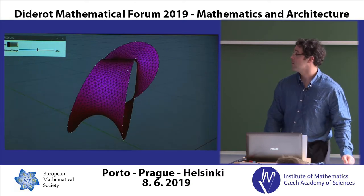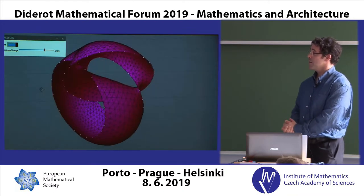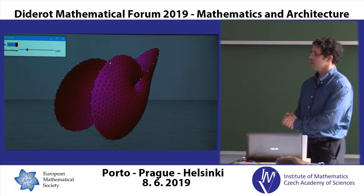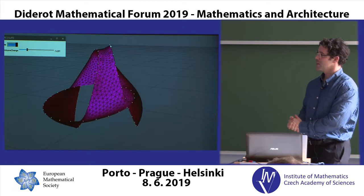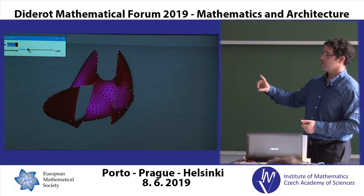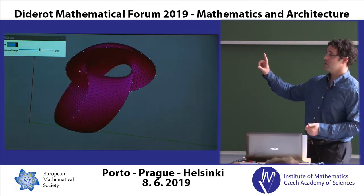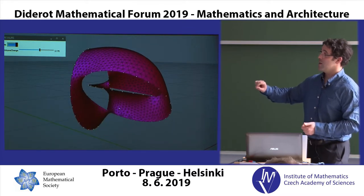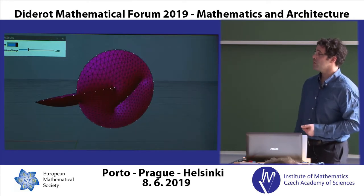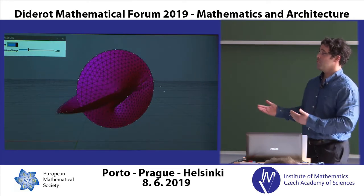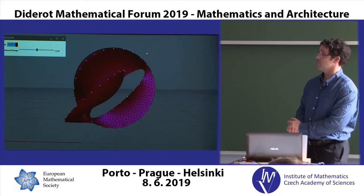Another thing you can combine with this is fixing the volume. Defining a volume for an open surface seemed strange at first, but the formula works by forming a tetrahedron between every triangle and an arbitrary point and summing the signed volumes of those tetrahedra. That way you can define a volume or a difference in volume relative to your starting position, and inflate the surface to get constant mean curvature surfaces.